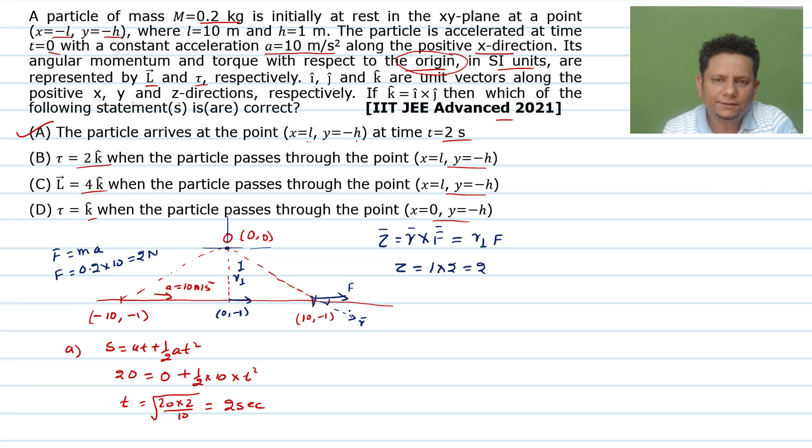Multiplied by 2, so the value is 2. Now for direction, if we look at this: r vector is in this direction, F vector is cross product. Using right hand thumb rule, the direction is 2k cap, which means option B is correct. Now L vector = 4k cap. We will evaluate this - this is option B confirmed.